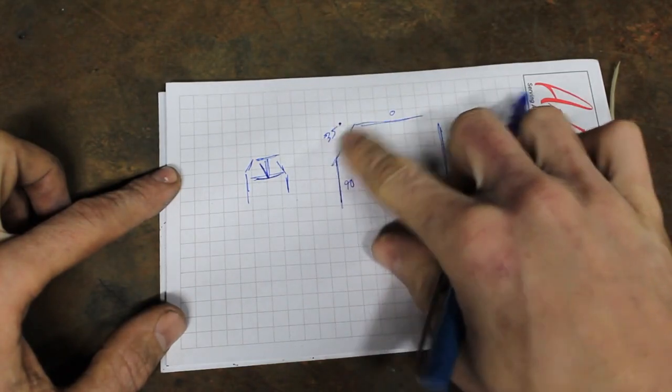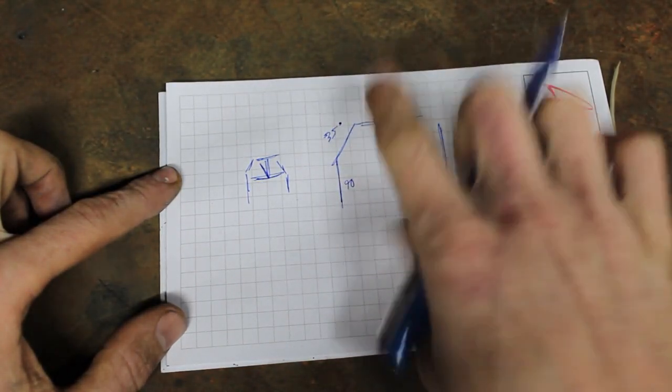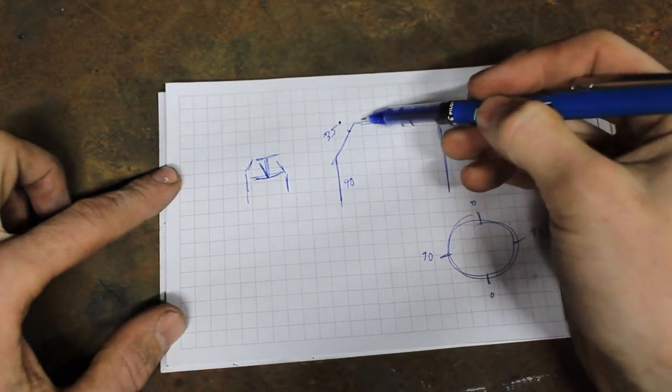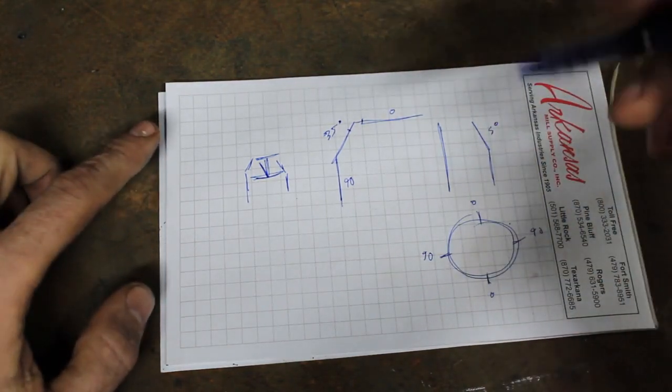When we chuck this up in our bender, we are going to index this tube in relation to this one five degrees from whatever we decided was our center line on our tube here. All on the same page at this point, right?